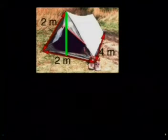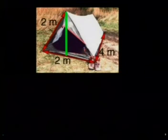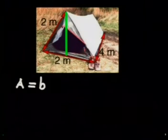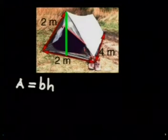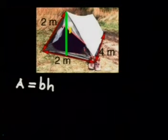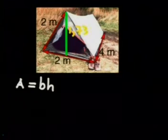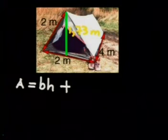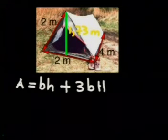We know that this shape is a right triangular prism. We know that the formula for calculating the area of this right triangular prism is area is equal to base times the height of the triangle which in this case is 1.73 meters.